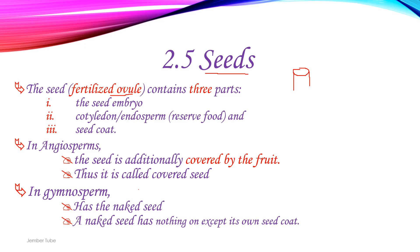Seeds are fertilized ovules and contain three parts: namely the embryo, the endosperm — also known as reserved food — and the cotyledon.